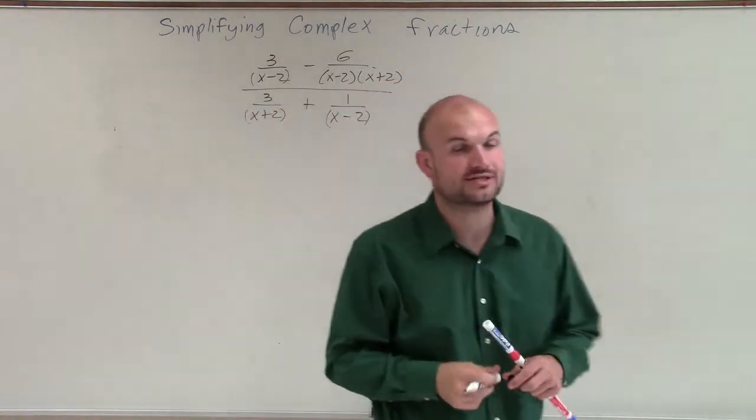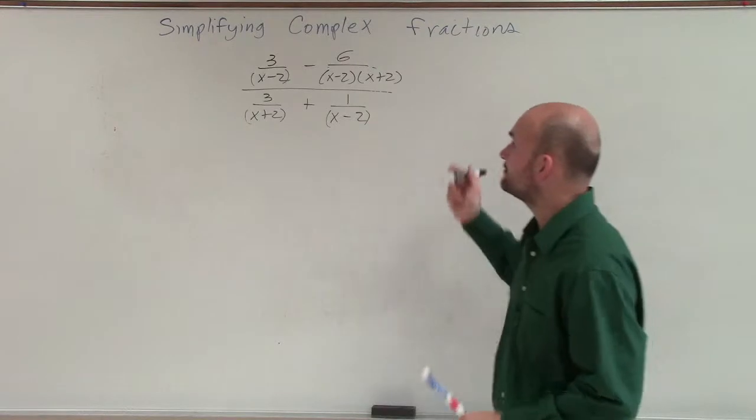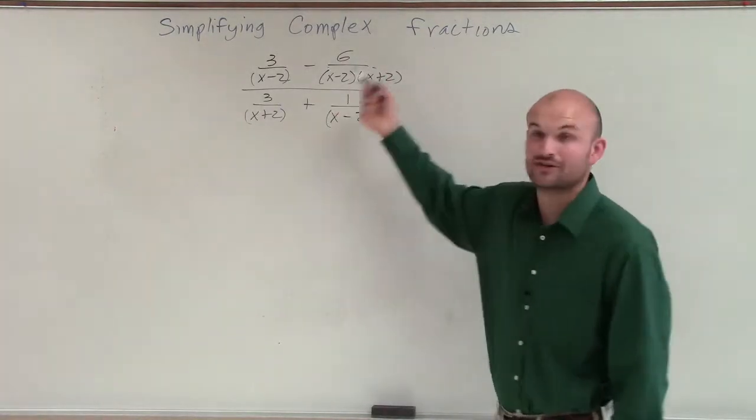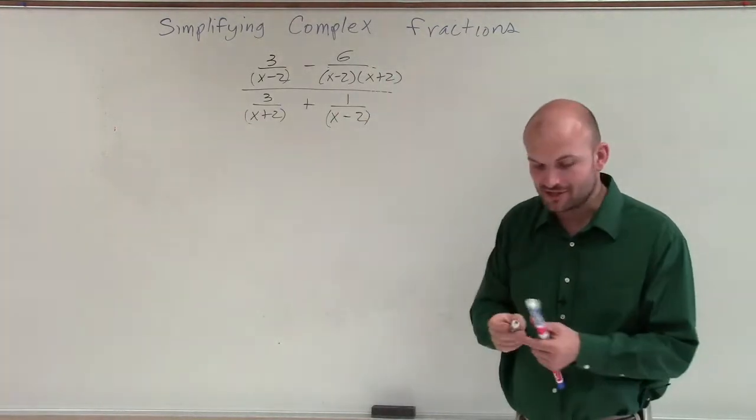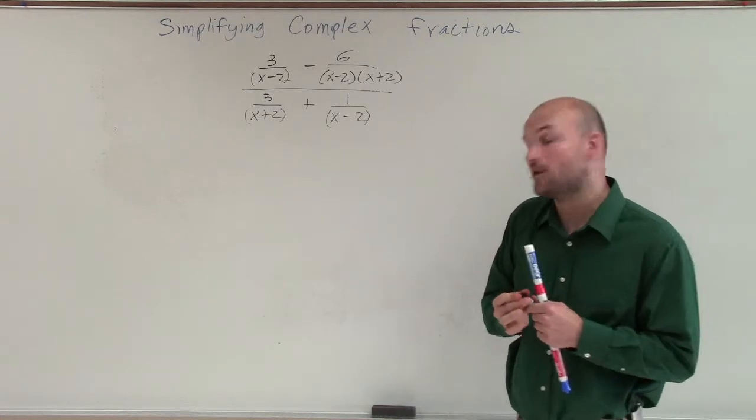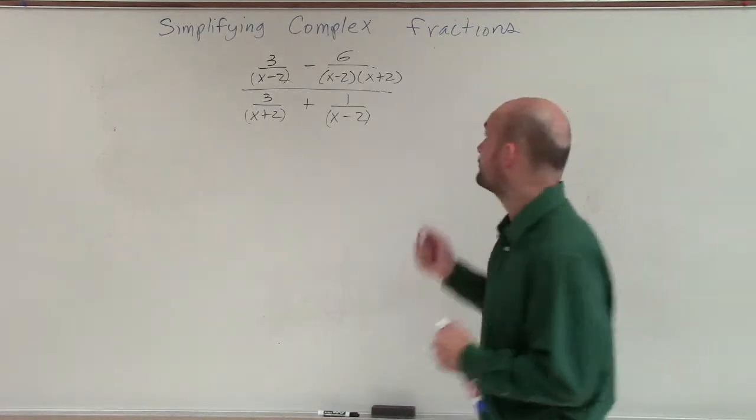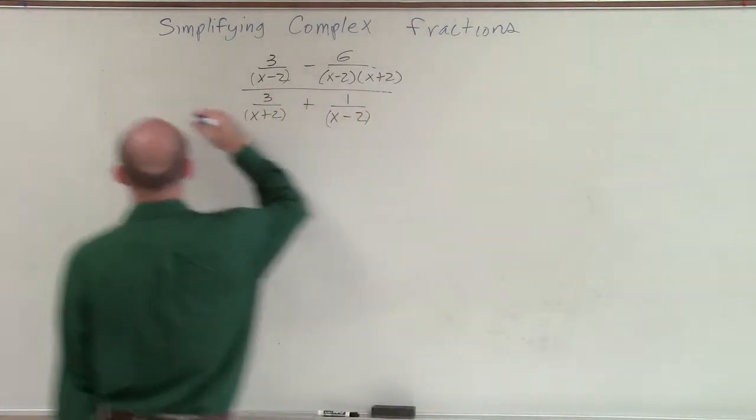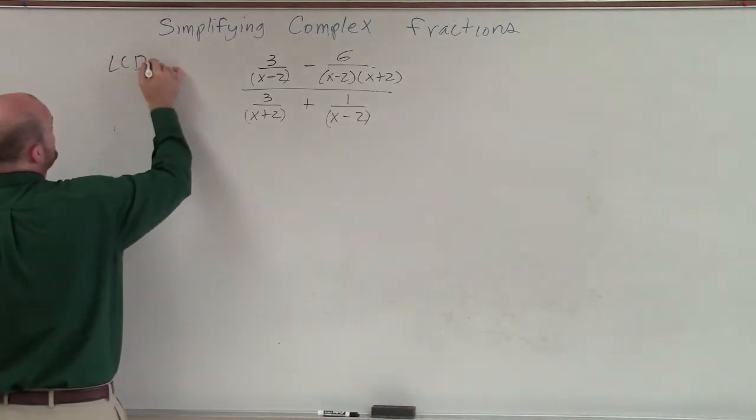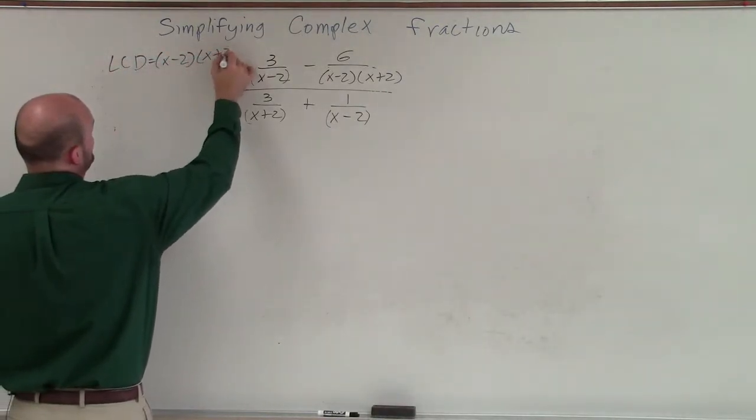And that's very helpful for us to understand, because now I can see that my only denominators that I have is either an x minus 2 or an x plus 2. So when that tells me that those are my only denominators, it's pretty easy for me to now determine that my LCD is just going to be x minus 2 times x plus 2.